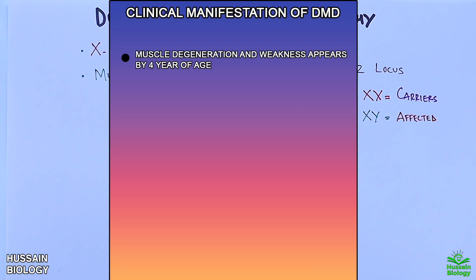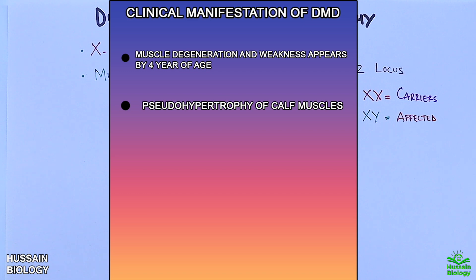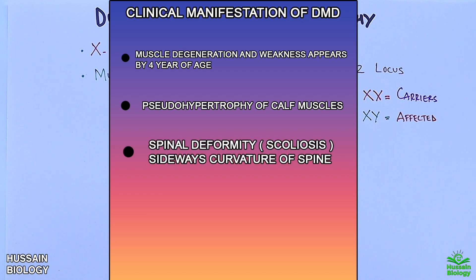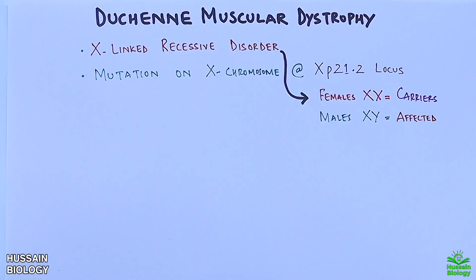When we look at the clinical manifestations, these symptoms mostly appear by the age of four, like progressive weakness in muscles due to skeletal muscle degeneration, pseudo-hypertrophy of calf muscles, spinal deformity which eventually leads to scoliosis, and cardiomyopathy. There are also some other clinical manifestations but they are of minor role.